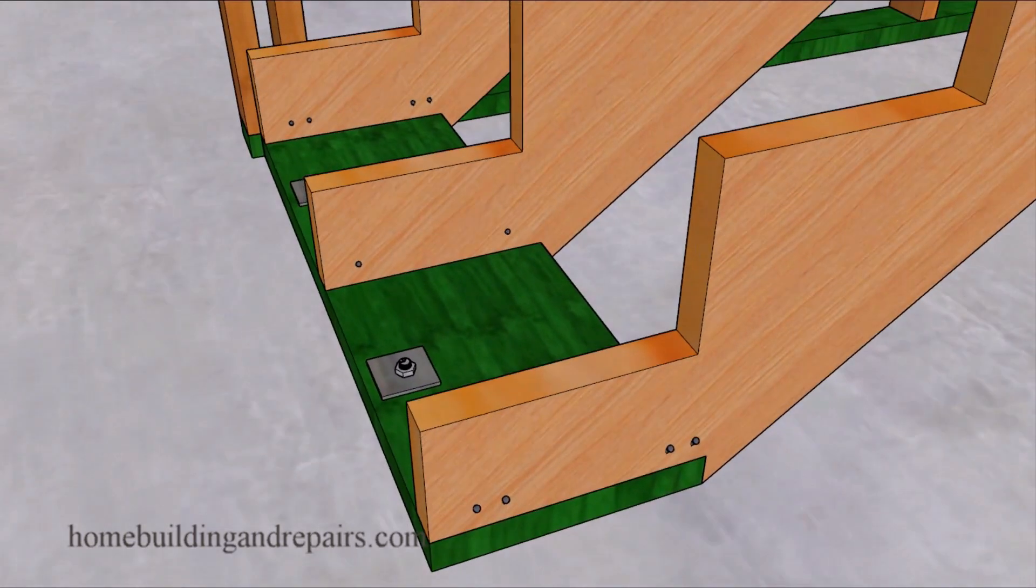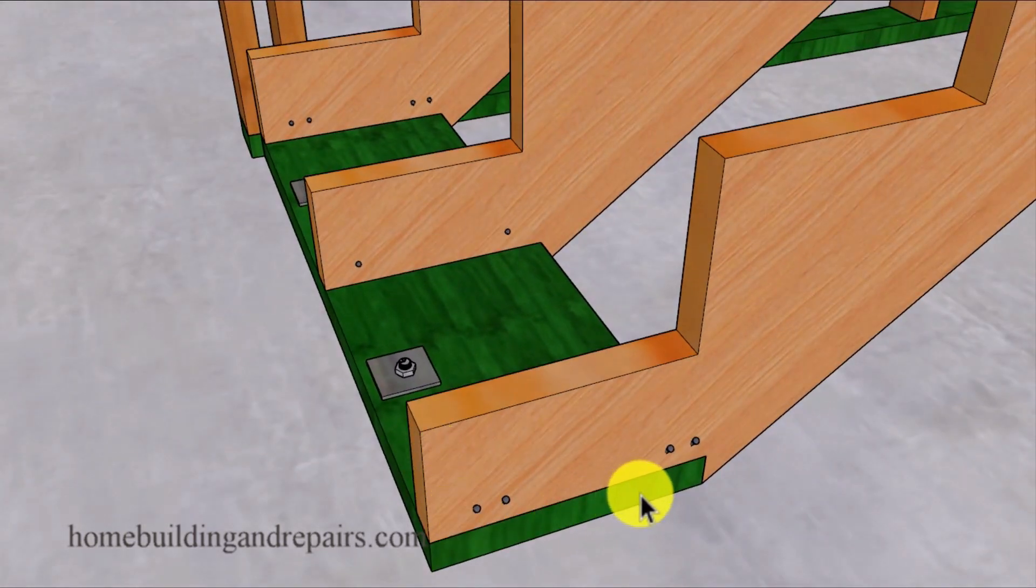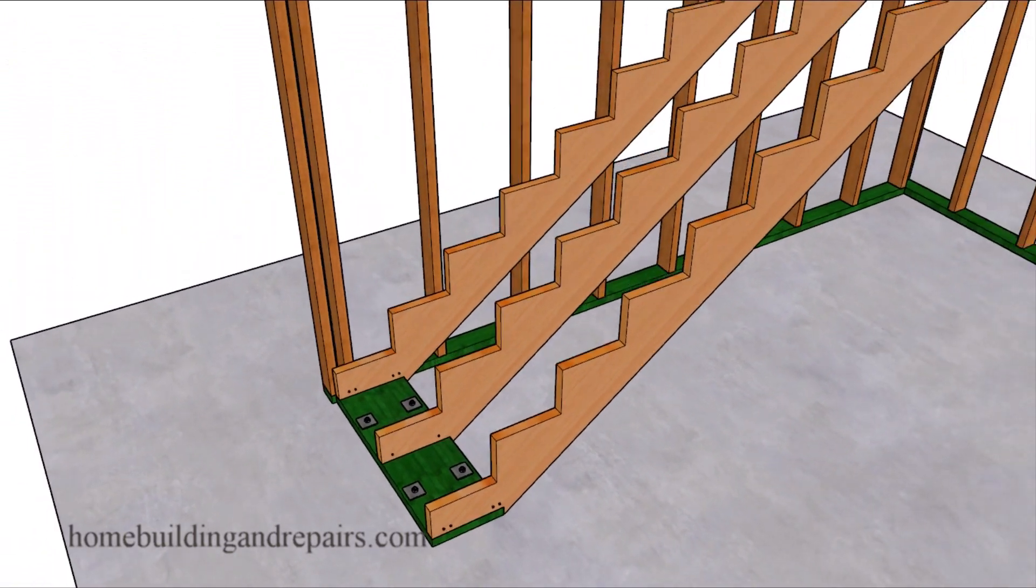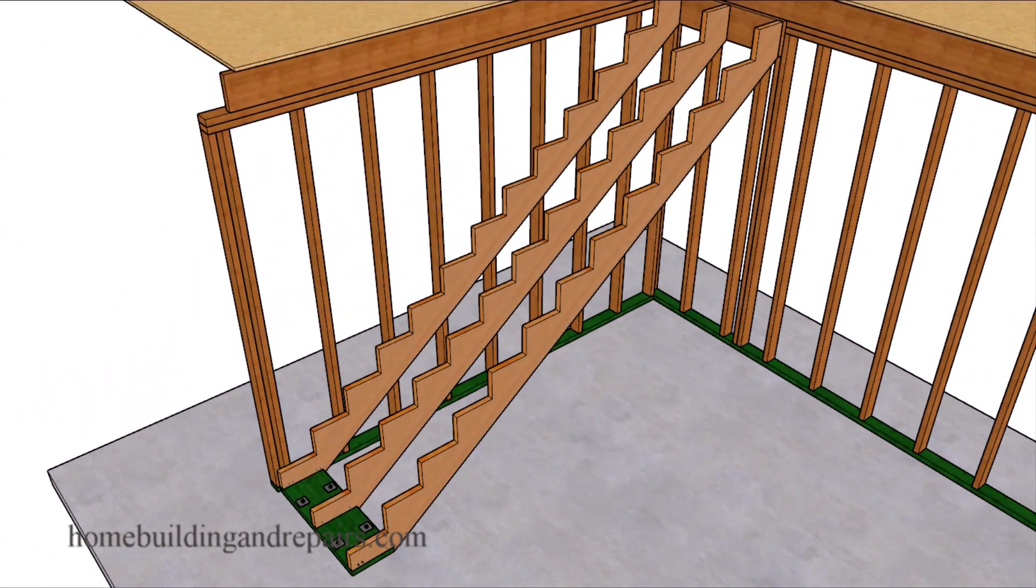Otherwise you could end up with the board twisting and forcing one side of the stringer up, and that's probably not going to happen if you have enough base framing anchors to prevent that from happening.